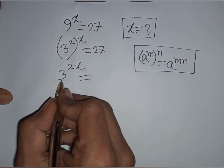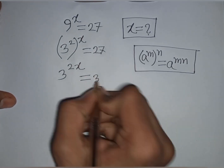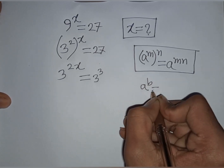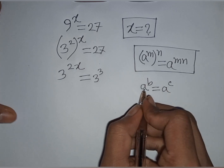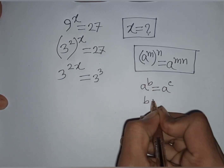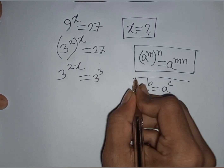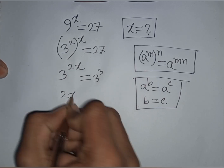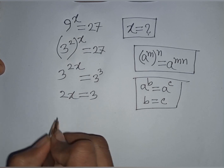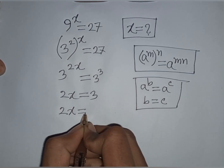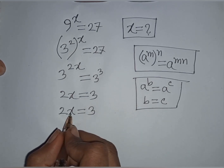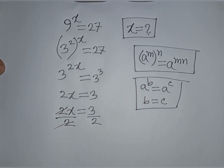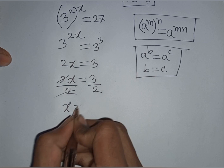Now the base is 3, and 27 can be written as 3 power 3. We see both bases are 3 — same base. Using the exponential rule: if a power b equals a power c, then same base cancels and b equals c. So 2x equals 3. Dividing both sides by 2, this 2 and this 2 cancel, giving x equals 3 by 2.